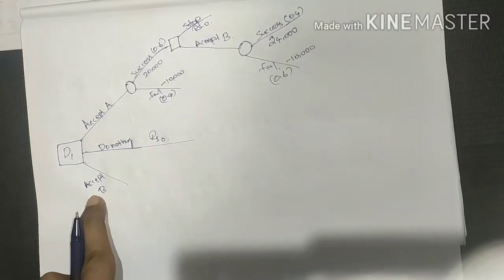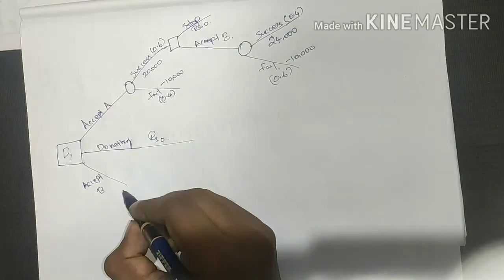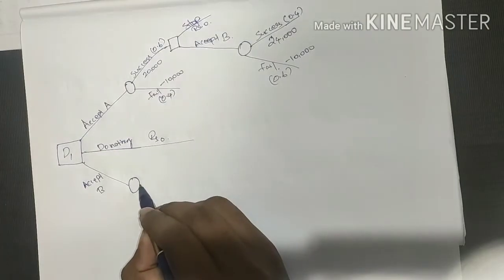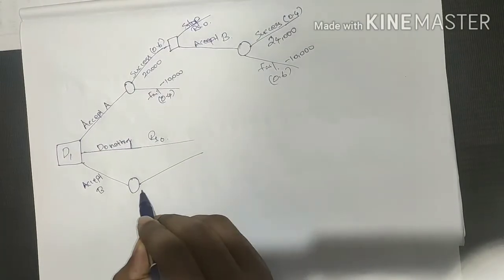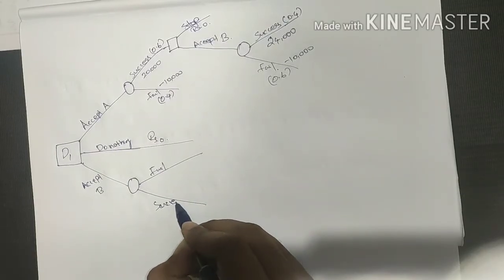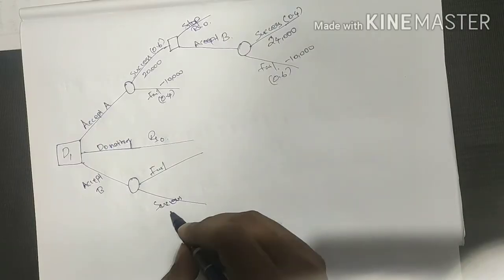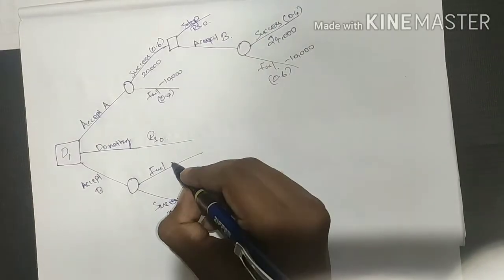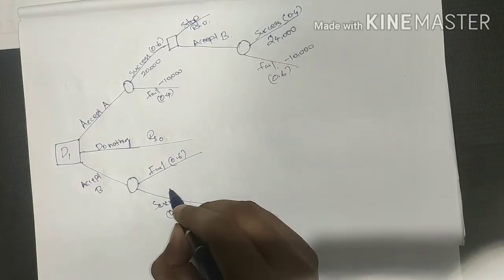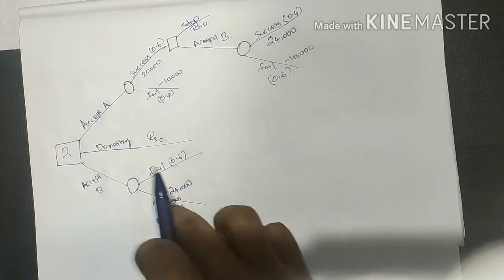The last option is accept B. If we accept B, there is one success branch and one fail branch. The probability of success for B is 0.4 and the probability of failure is 0.6. If B is successful, the benefit returned is Rs. 24,000.